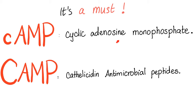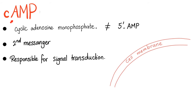cAMP — the small c — is a second messenger, cyclic adenosine monophosphate. Do not confuse cyclic AMP with 5' AMP. These are not the same thing. Today's topic is cyclic AMP; it's a second messenger.